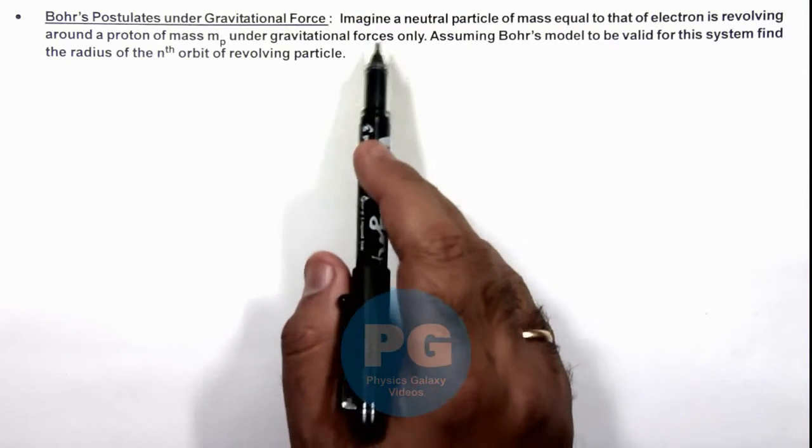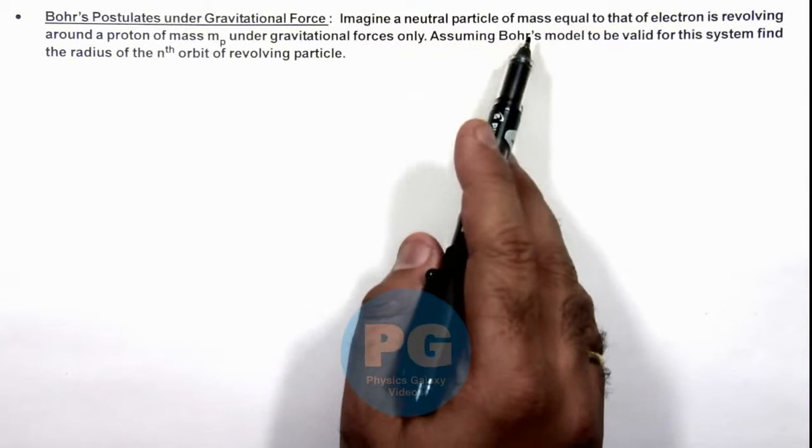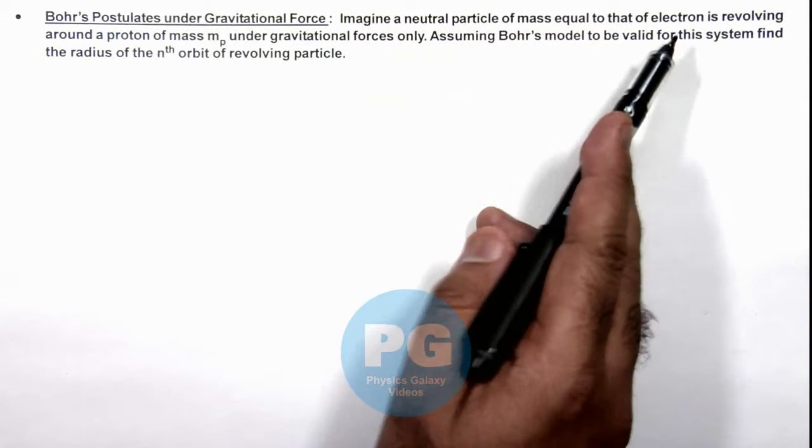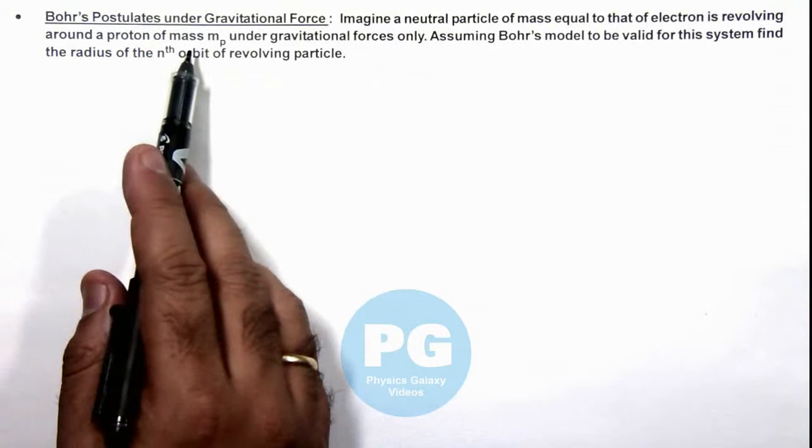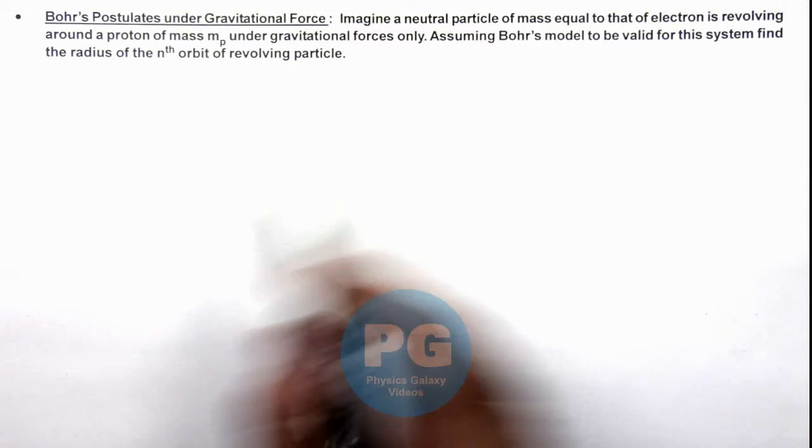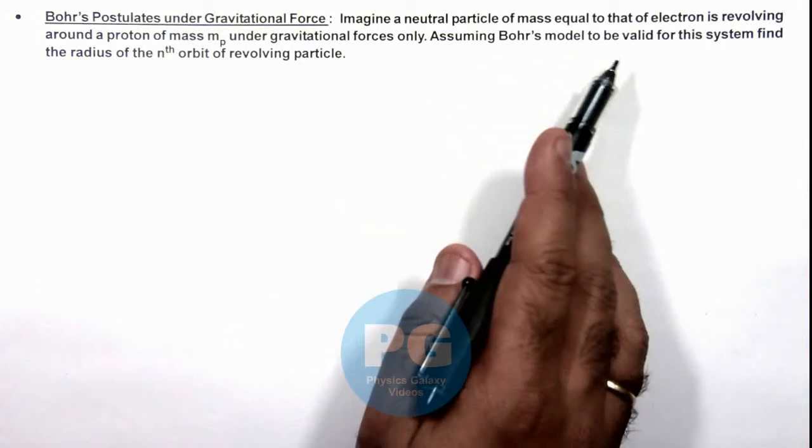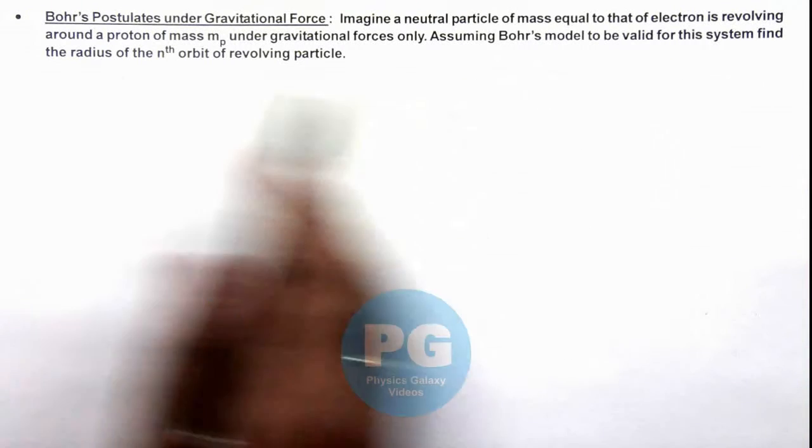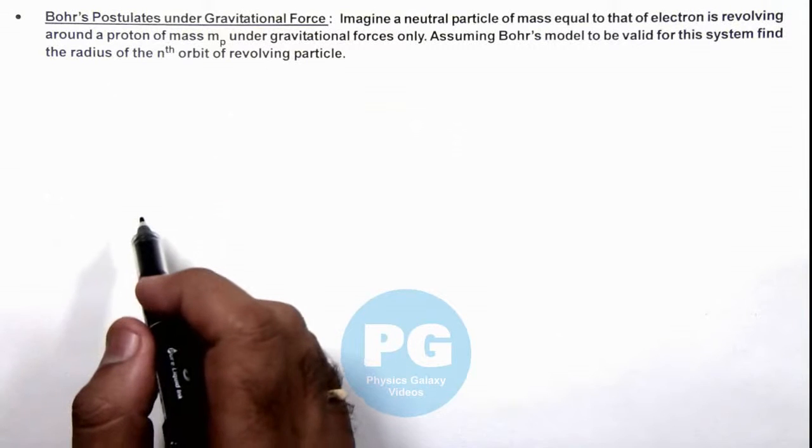Here we are required to imagine a neutral particle of mass equal to that of electron revolving around a proton of mass mp under gravitational force only. Assuming Bohr's model to be valid for this system, we are required to find the radius of the nth orbit of the revolving particle.